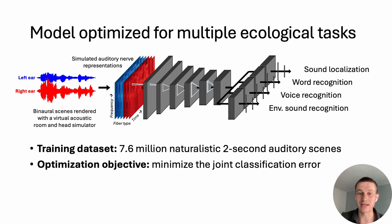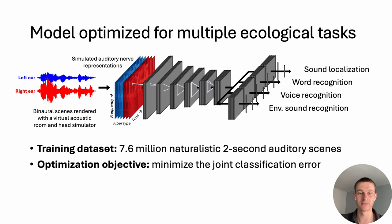Model predictions under different peripheral hearing loss configurations may offer insight into the diversity of individual outcomes in hearing loss. Unlike prior models that separately tackled these domains, here we trained a single model to both localize and recognize sounds using simulated auditory nerve representations. The training set consisted of millions of naturalistic auditory scenes rendered in different virtual acoustic environments.